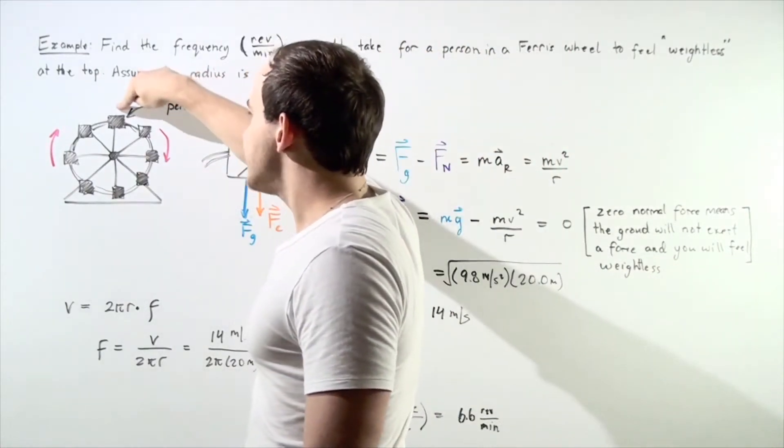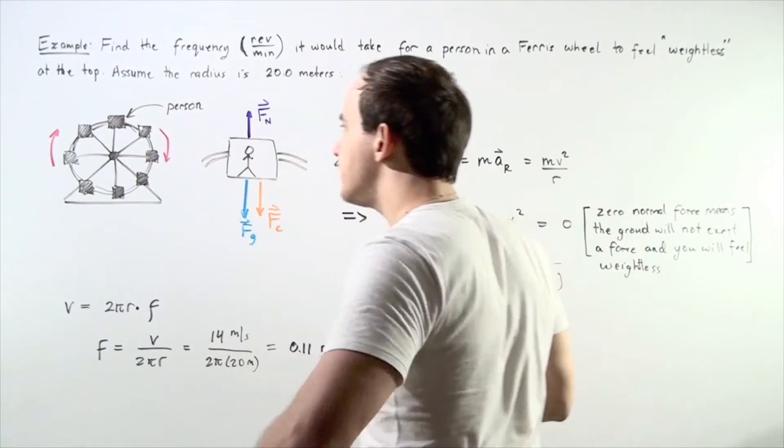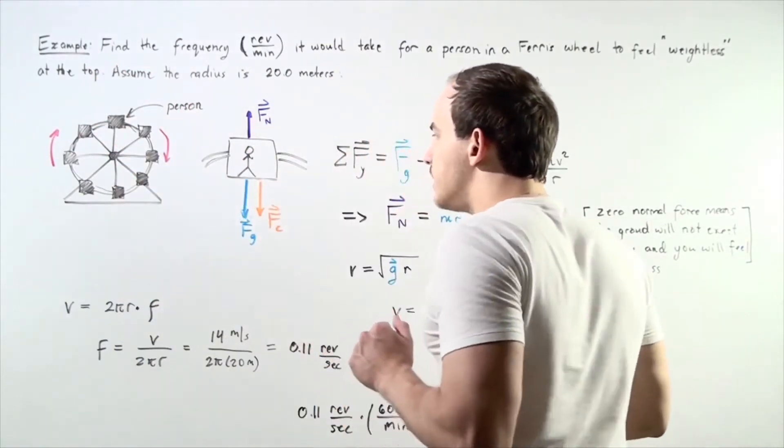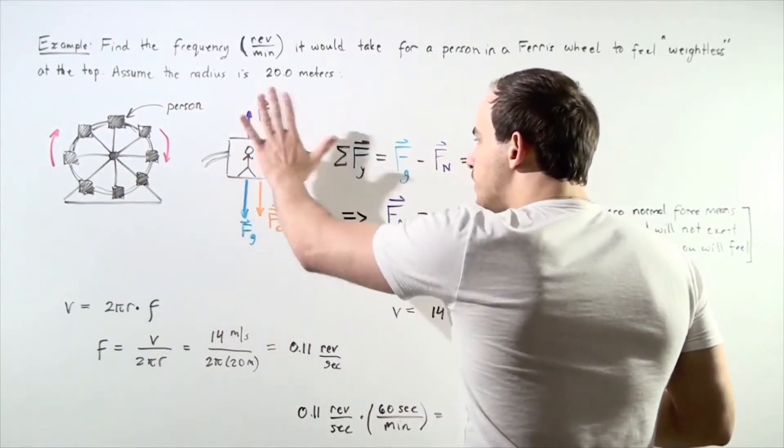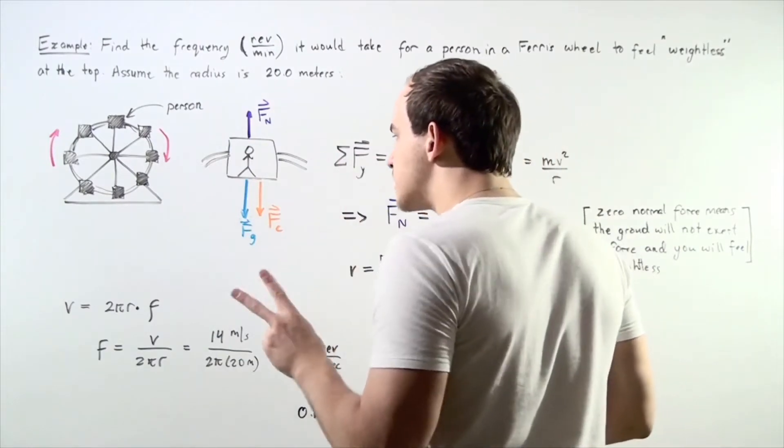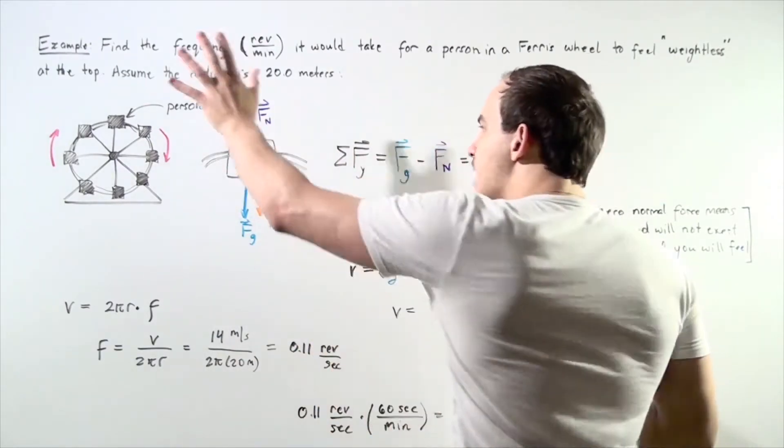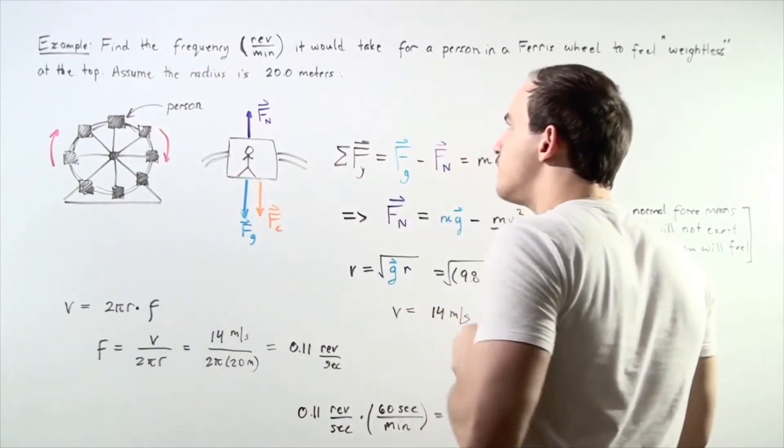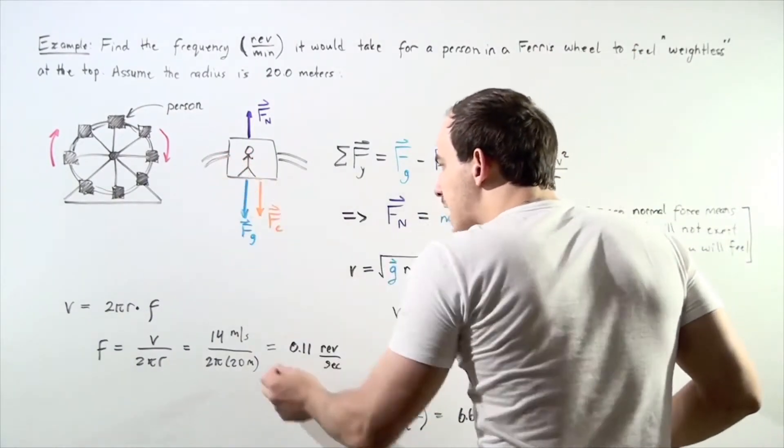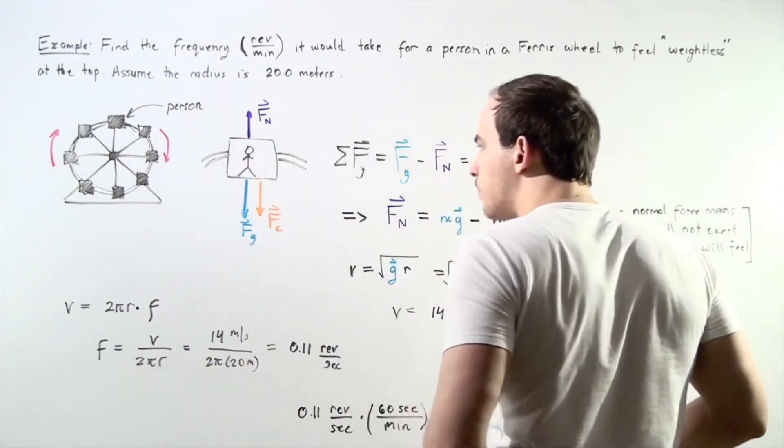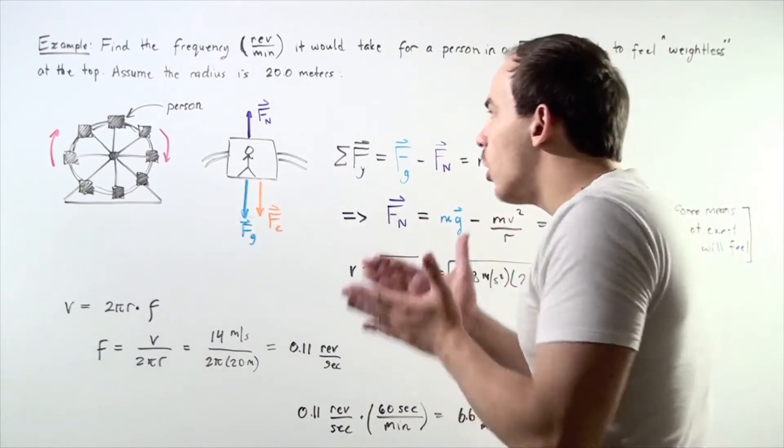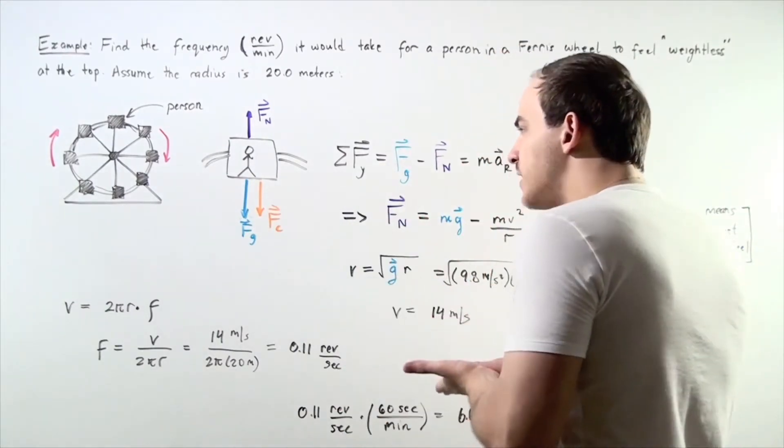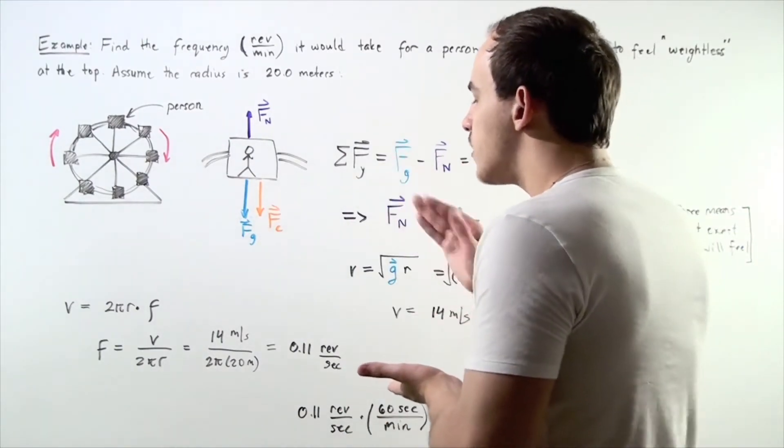Here we have the person at the top cabin. We zoom in on that cabin and find the following picture. Two forces are acting on the person at the top of the Ferris wheel: the force of gravity pulling downward and the normal force created by the bottom of the cabin acting on the person.